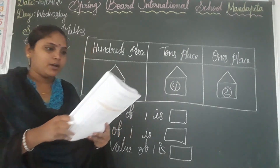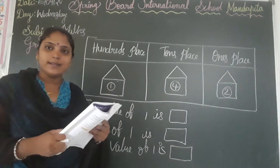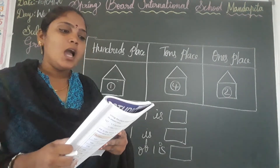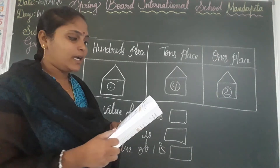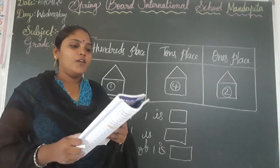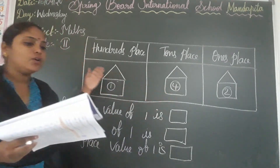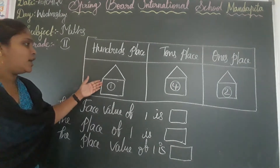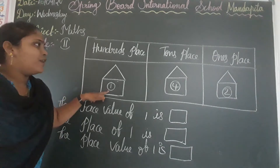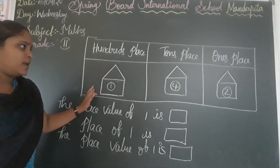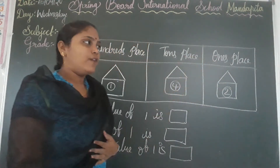Children, everyone open page number 30. Observe exercise 2.6. Read the question everyone: look at how the digits of the number 142 are placed. Fill in the boxes. Here 1 is in the 100's place, 4 is in the 10's place, and 2 is in the 1's place. Now we have to fill these boxes.